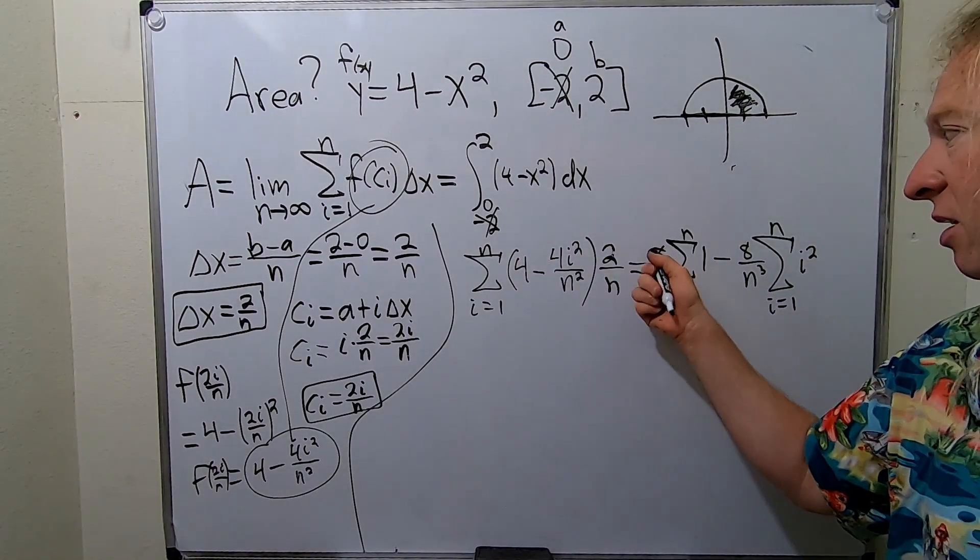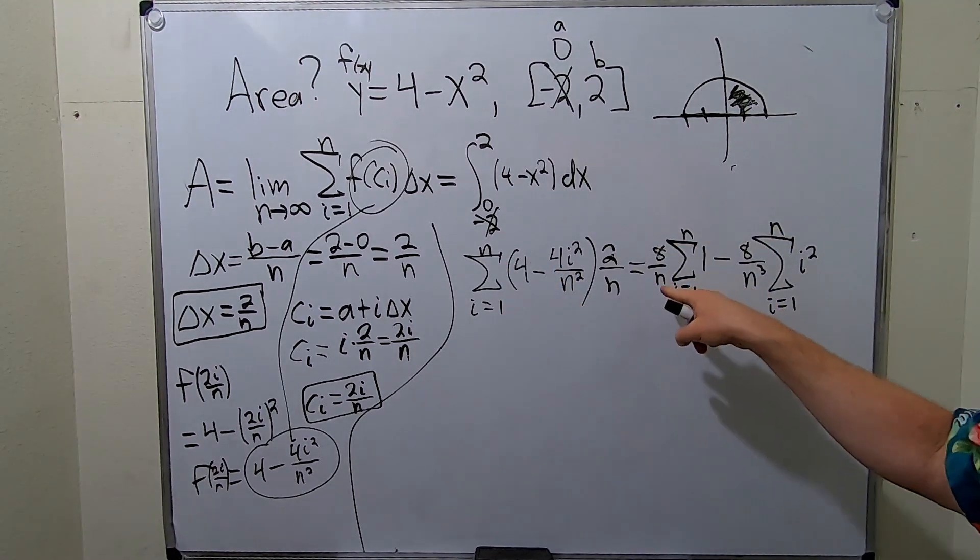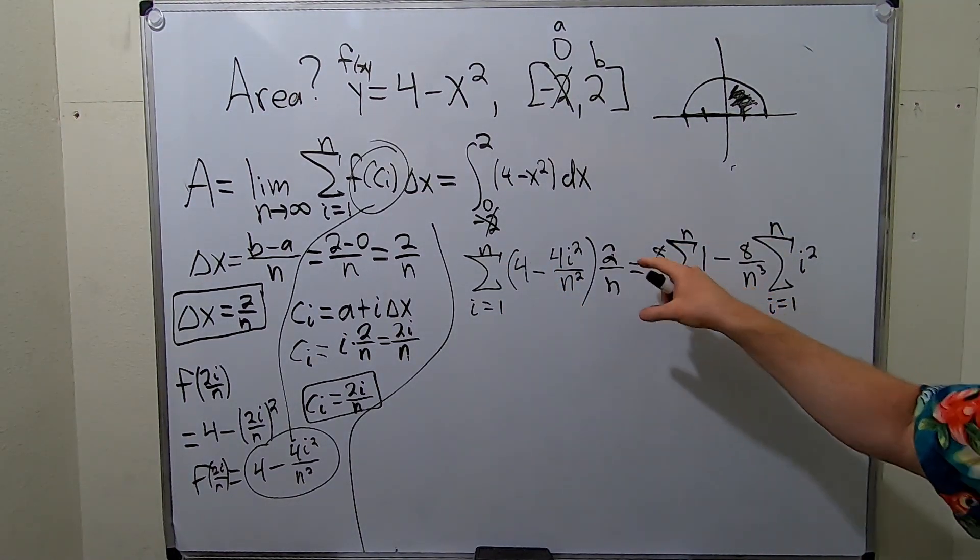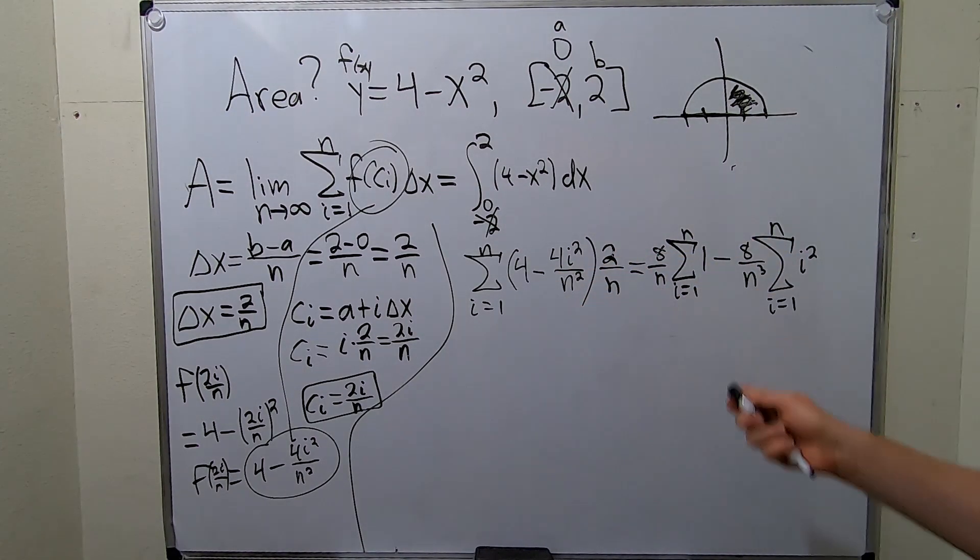So this times this is 8. So 2 over n times 4 is 8 over n. You pull it out because there's no i. So you're left with the 1. Because if you multiply this times this, you get 8 over n. 2 over n times this, 2 times 4 is 8. n times n squared is n cubed. So this is going to be equal to 8 over n.